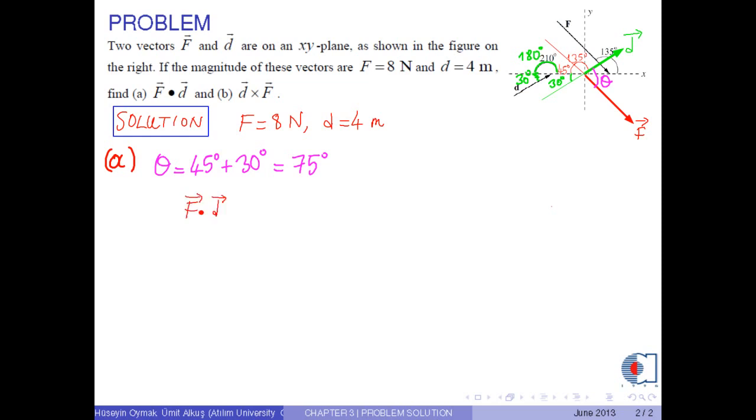Then, f dot d equals f times d times cosine theta. If we put the corresponding numerical values, 8 times 4 times cosine 75 degrees and the result is approximately 8.28 newtons times meters.